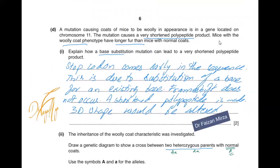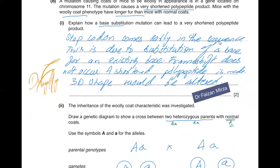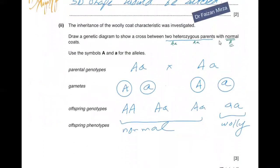A mutation causing coats of mice to be woolly is located on chromosome 11 and causes a very shortened polypeptide. A base substitution can lead to a shortened polypeptide by forming a stop codon early in the sequence — this is called a nonsense mutation. No frameshift occurs because only one base is substituted, but a short polypeptide is made and its 3D shape is altered, having far fewer amino acids than the normal polypeptide.